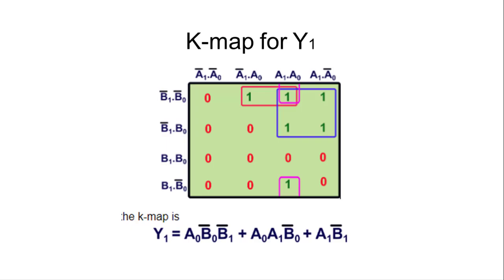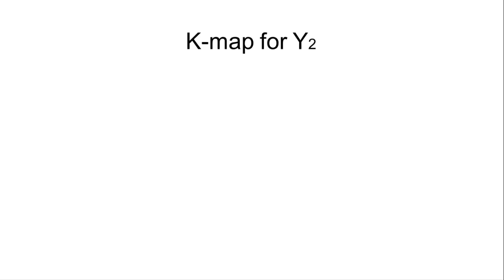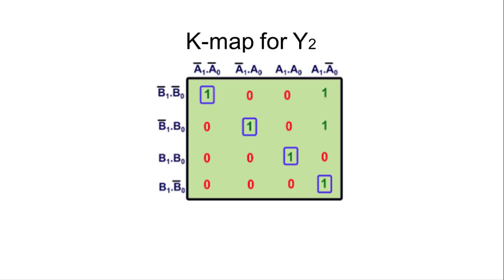For y1 we derive the equation from the K-map with two pairs and a quad. Finally for y2, solving the K-map gives y2 = (a1 XNOR b1) AND (a0 XNOR b0). The PDF with full derivations is linked in the description section of the video.